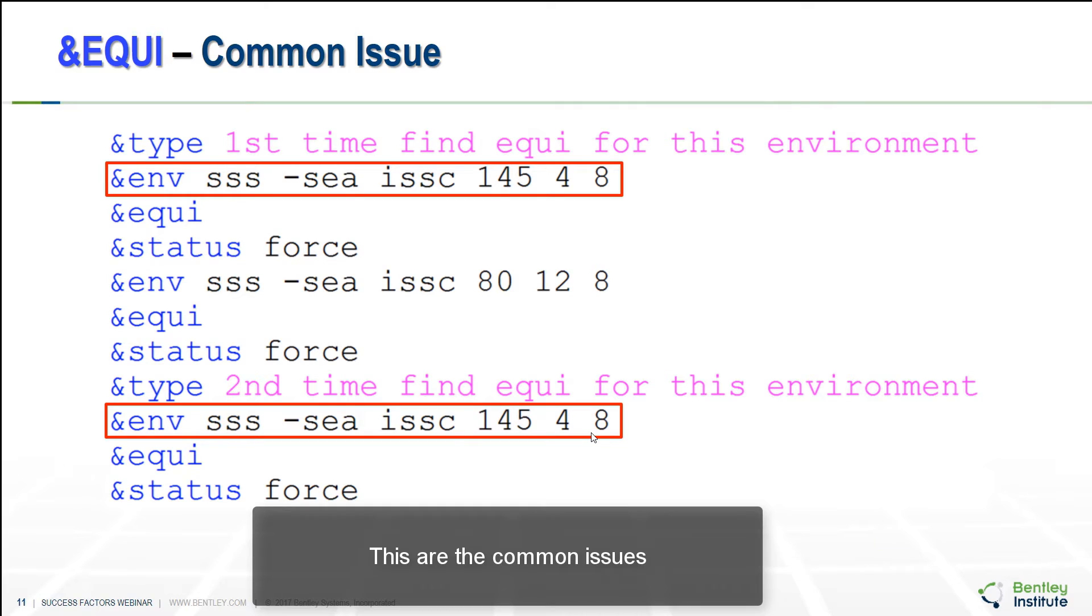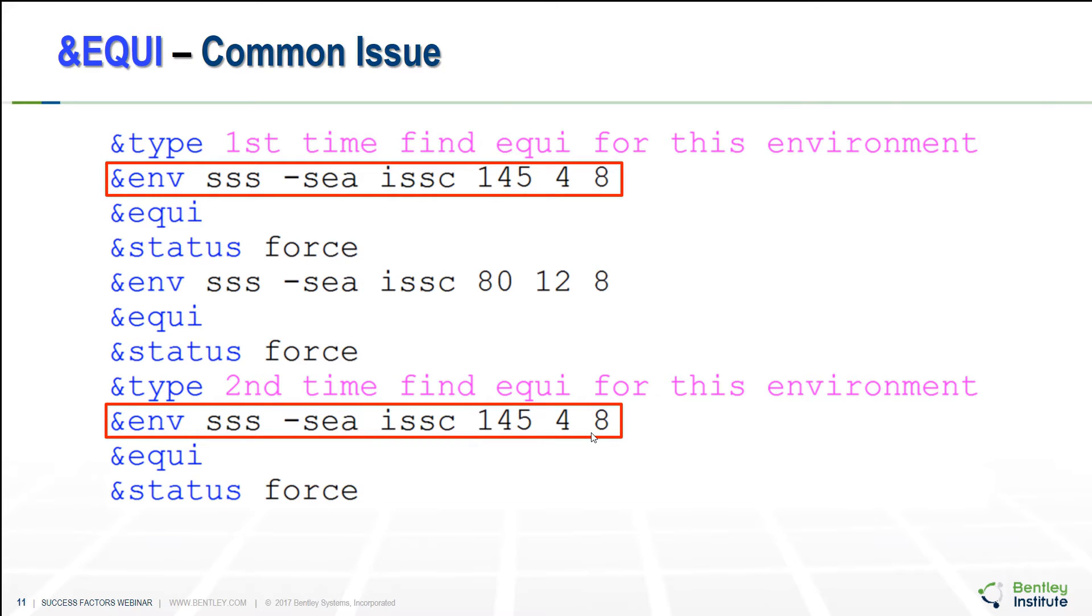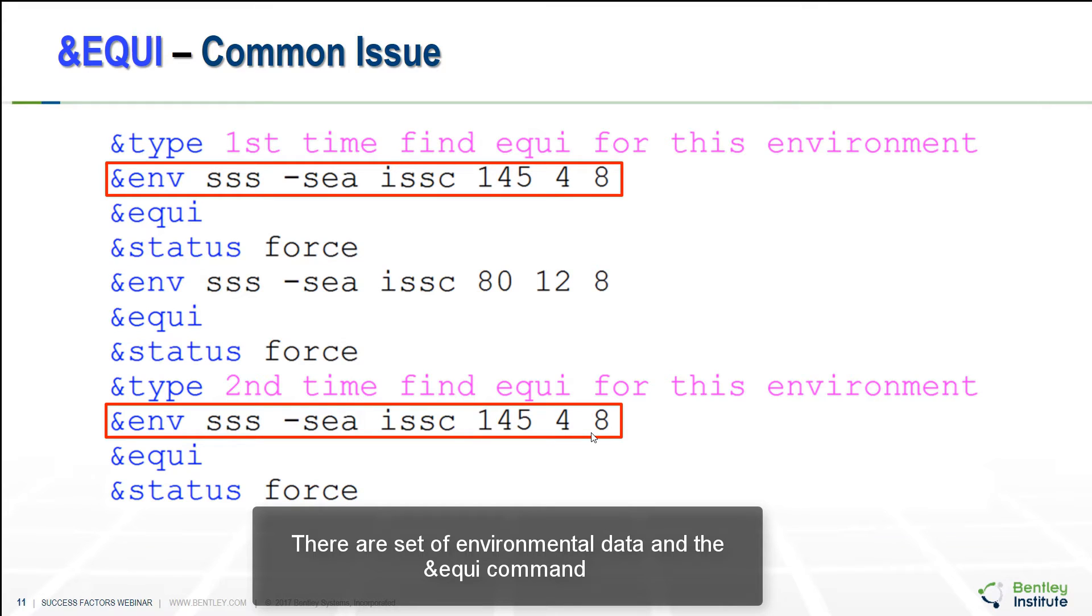This is the common issues we are researching for many times of question that why equilibrium is different. The set of environmental data and the &EQUI command have been issued for two times at the same environment as shown with the rectangles. There is a heading of 145 degrees, the significant wave height of 4 and the wave period of 8.